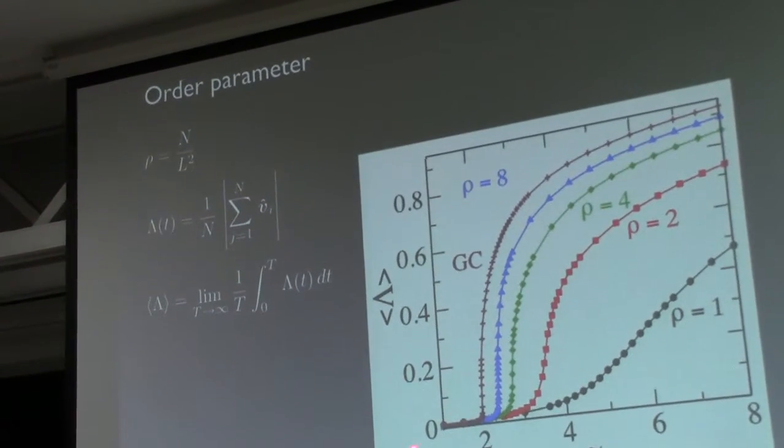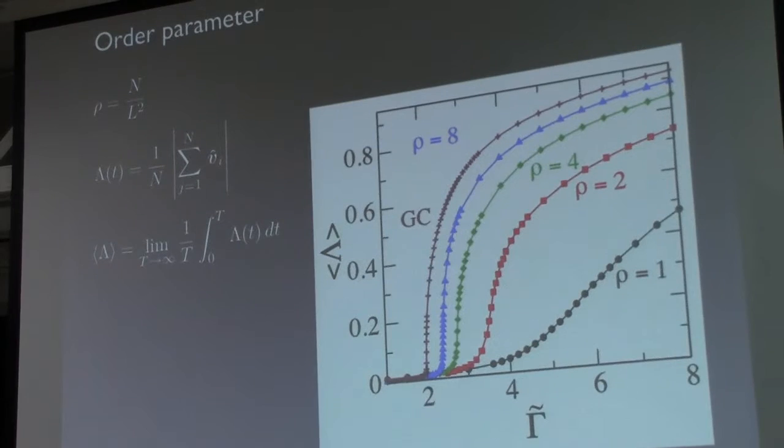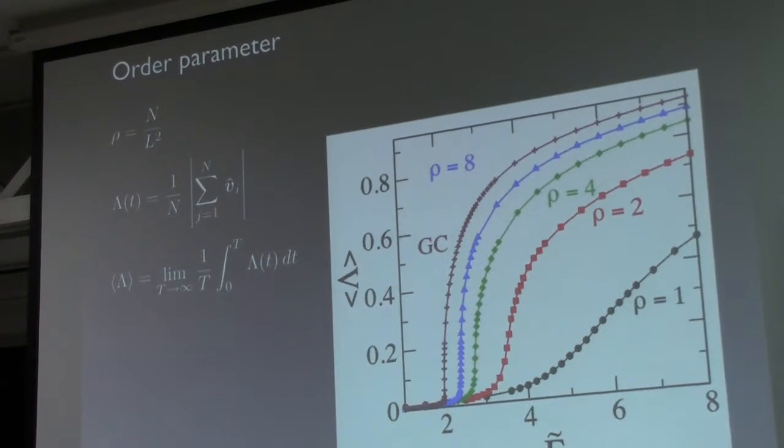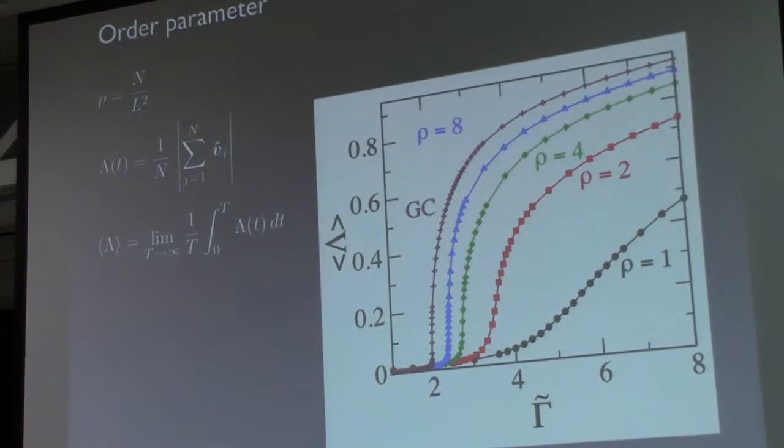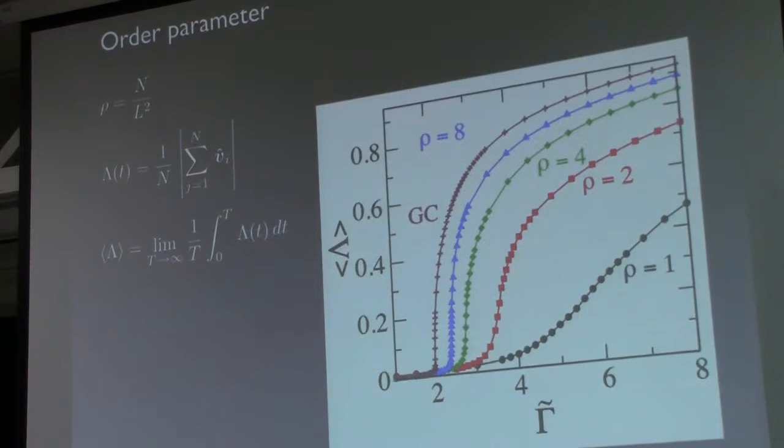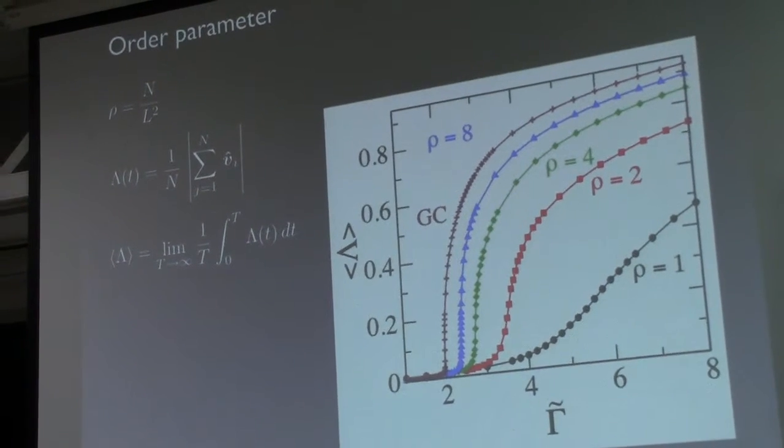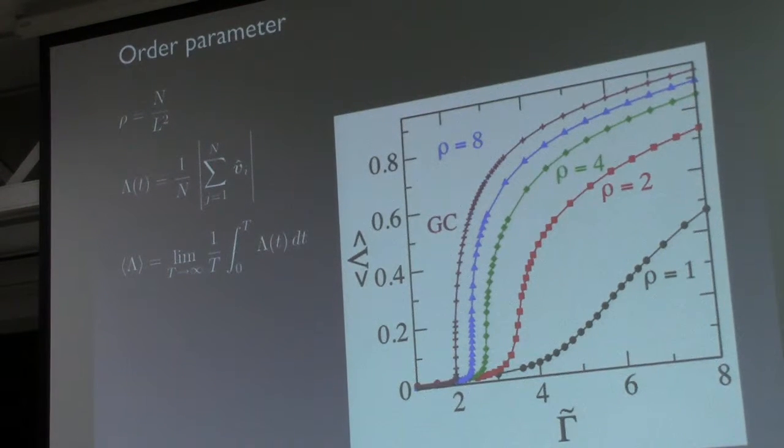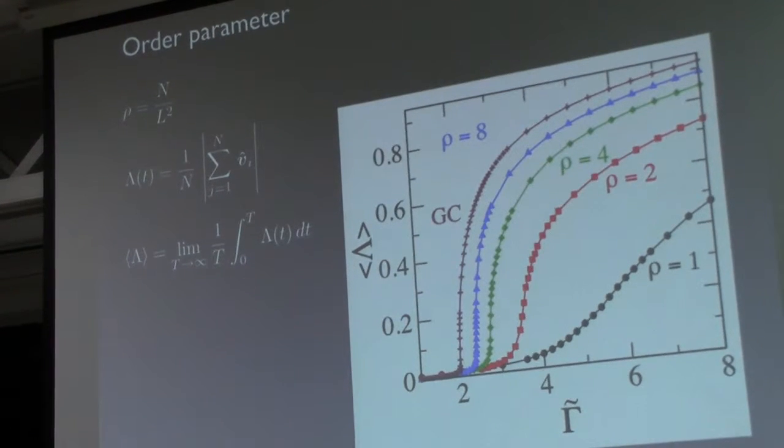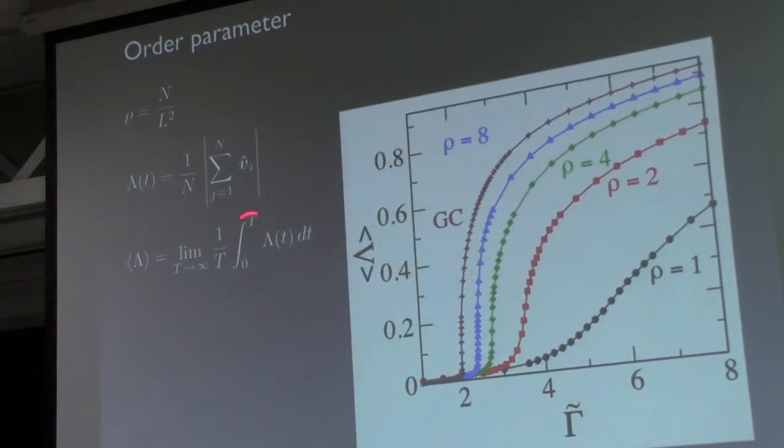What we observe is that yes, we can without self-propulsion have a transition to collective motion from a state which is disordered. In our case, it keeps the properties of thermal equilibrium. Even with the interaction turned on, particles perform diffusive motion and the distribution of their velocity is Maxwell-Boltzmann. We have two timescales competing: thermal fluctuations and the alignment rate. When the alignment rate is fast enough, you start to see collective motion with net speed different from zero. This is the order parameter plotted as a function of different densities in the stationary state.